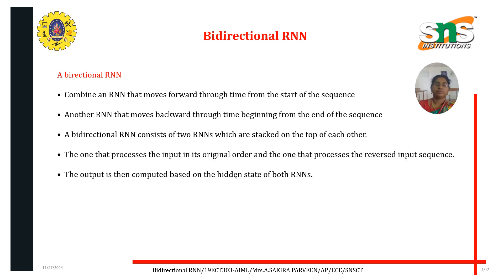A bi-directional RNN combines an RNN that moves forward through time from the start of the sequence. RNN stands for recurrent neural network. Recurrent neural networks have many types: conventional neural networks, bi-directional neural networks, and recursive neural networks, among others. Understanding the need for bi-directionality in RNN makes it easier to grasp the concepts involved.